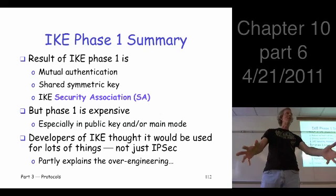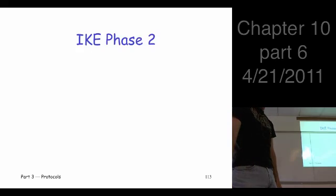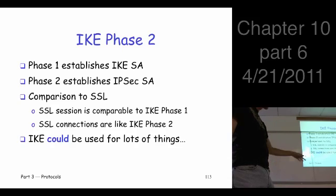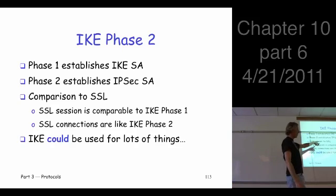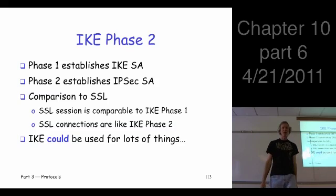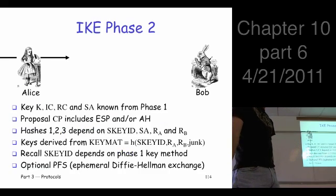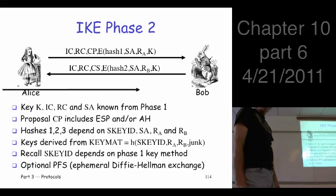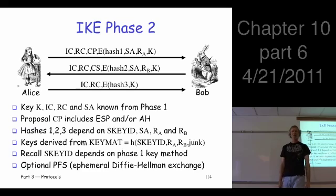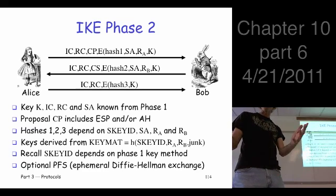Finally, after doing phase one and phase two, you can start encrypting packets. Phase two is really analogous to SSL sessions and connections. You've already done the costly phase one, so make phase two cheap and have it use the key you've already established. There are no public key operations in phase two — it just relies on symmetric key stuff, so it's efficient. It only takes three messages.